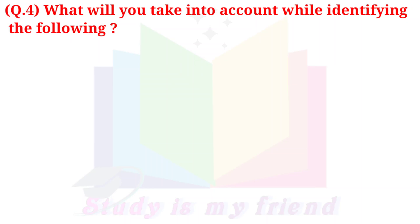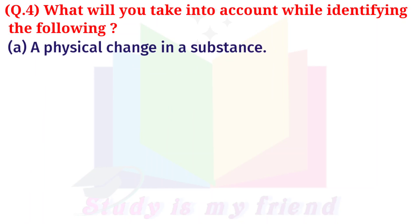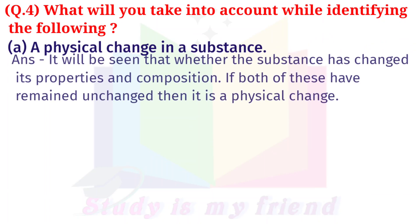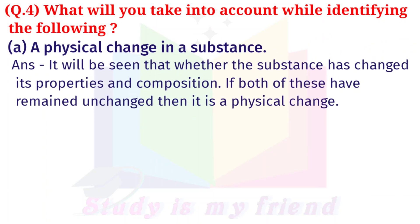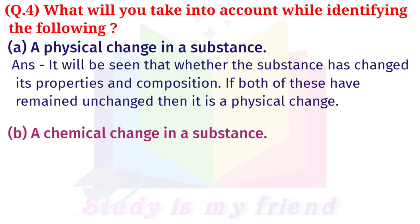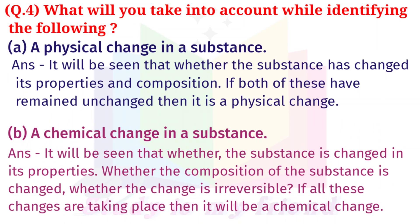Question 4: What will you take into account while identifying the following? A. A physical change in a substance. Answer: It will be seen whether the substance has changed its properties and composition. If both of these have remained unchanged, then it is a physical change. B. A chemical change in a substance. Answer: It will be seen whether the substance has changed its properties, whether the composition of the substance is changed, and whether the change is irreversible. If all these changes are taking place, then it will be a chemical change.